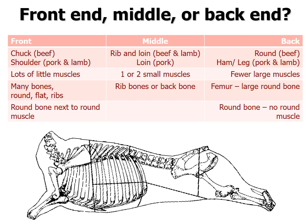When learning to identify cuts, it helps to first ask: does it come from the front end, the middle, or the back end? Cuts from the front — the chuck in beef, or the shoulder in pork and lamb — are going to have a whole lot of little muscles with bones shaped in funny ways. If you're looking at cuts from the arm specifically, you'll have a round bone next to a round muscle.